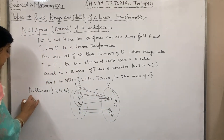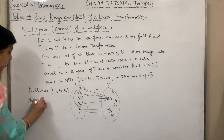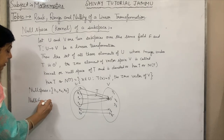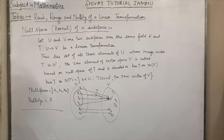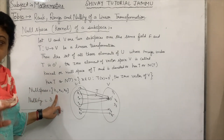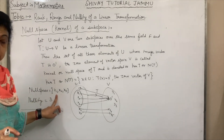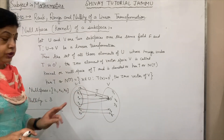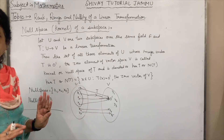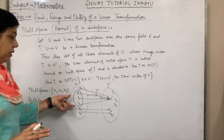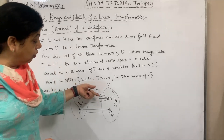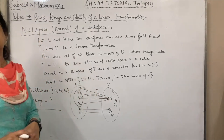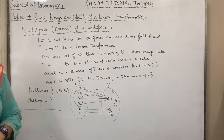What is nullity? Nullity means number of elements in the null space. Null space means non-zero elements that go to zero; zero will go to zero — this is fixed. The number of other elements, other than zero, that go to zero dash — these elements are known as null space elements.